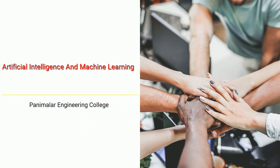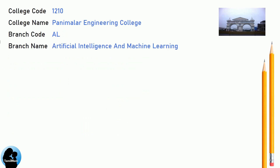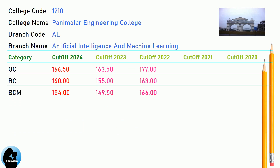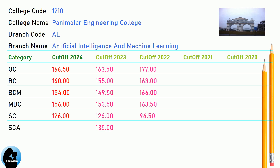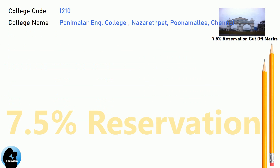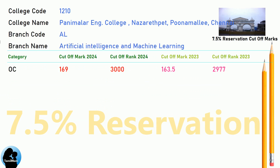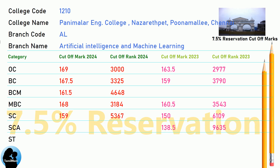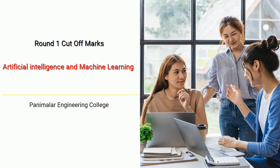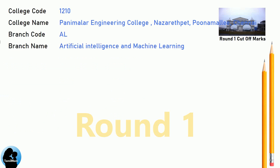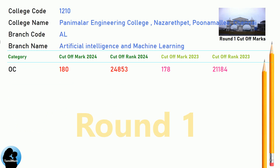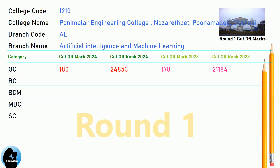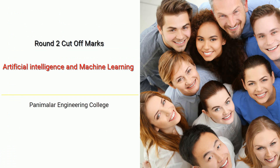TNEA Cut-off for Panimalar Engineering College in Artificial Intelligence and Machine Learning. TNEA 7.5 Reservation Cut-off for Panimalar Engineering College in Artificial Intelligence and Machine Learning. TNEA Round 1 Cut-off for Panimalar Engineering College in Artificial Intelligence and Machine Learning.